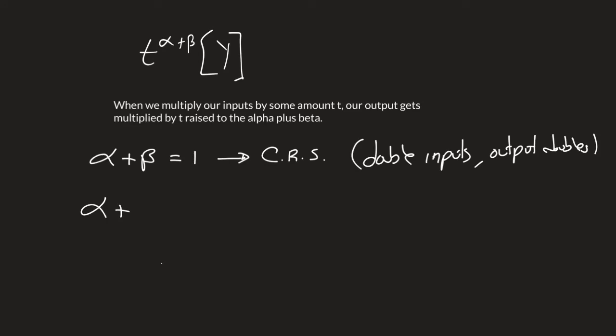We could also have alpha plus beta greater than one. This would be increasing returns to scale, where if I multiply my inputs by t, my output is greater than t. So if I double my inputs, my output more than doubles.